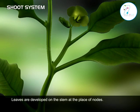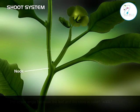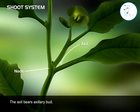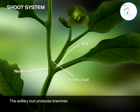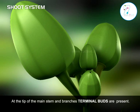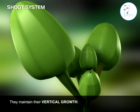The leaves are developed on the stem at the nodes. The upper angle between the leaf and the stem is called the axil. The axil bears axillary buds, and the axillary bud produces branches. At the tip of the main stem and branches, terminal buds are present. They maintain vertical growth.